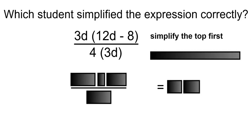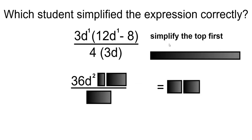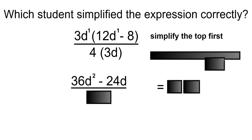Simplify the top first. 3 times 12 is 36. And D, which is D to the 1, times D, which is D to the 1, will equal D to the 2 as you add the exponents together. Minus 3 times 8 is 24, and that will be 24D.